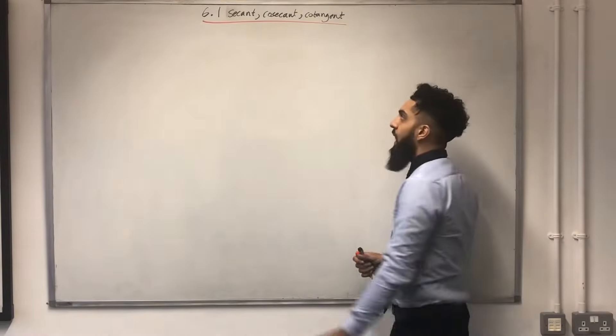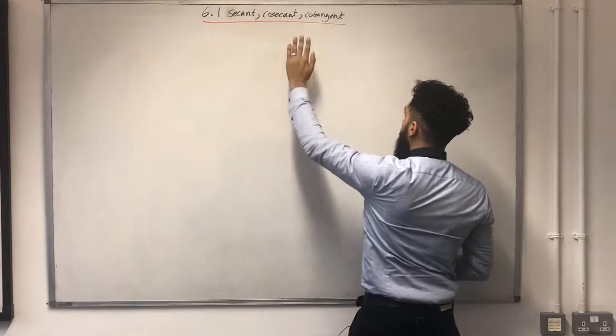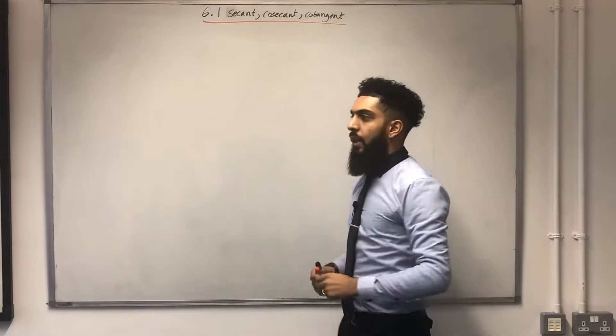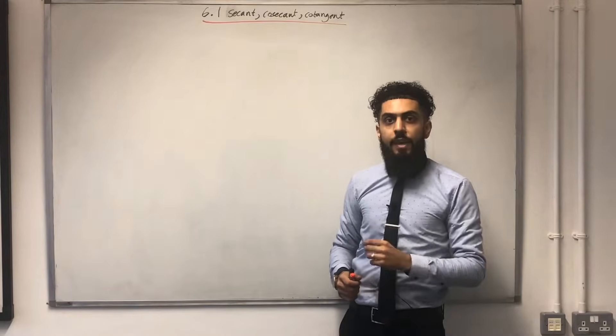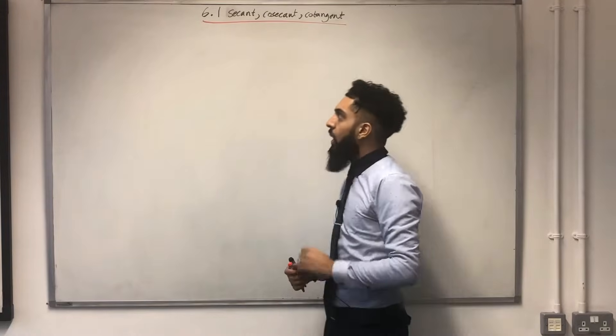In this video tutorial, I'll be looking at 6.1 secant, cosecant, cotangent. 6.1 represents Chapter 6, Section 1 of the Pearson A-Level Maths Pure Maths Year 2 textbook.